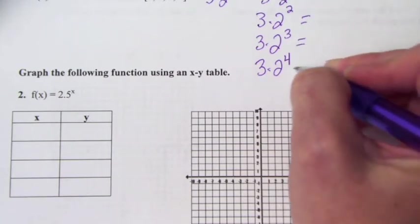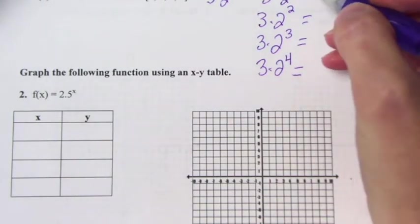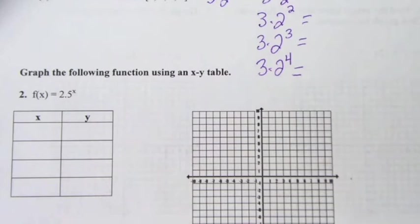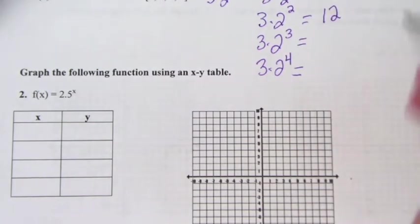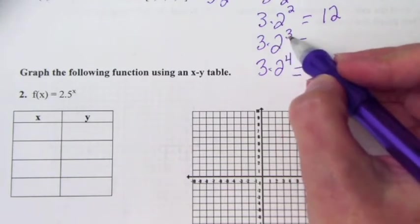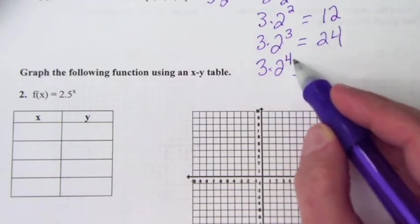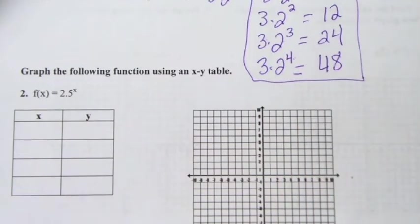Please make sure that you're following order of operations — you have to do exponents first. So 2 to the first power is 2, and 2 times 3 is 6. The second one: 2 squared is 4, and 4 times 3 is 12. 2 to the third power is 8, and 8 times 3 is 24. 2 to the fourth power is 16, and 16 times 3 is 48. Just be sure to follow order of operations — that's all it's asking for on number one.